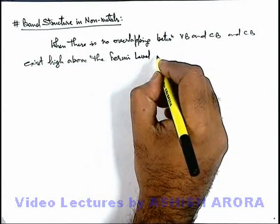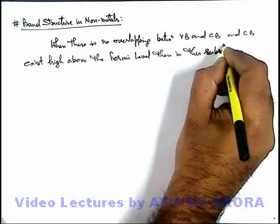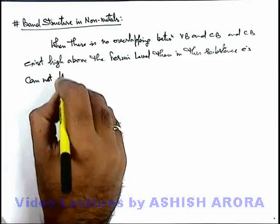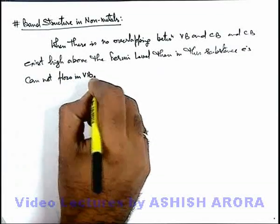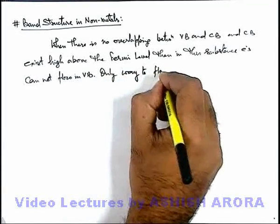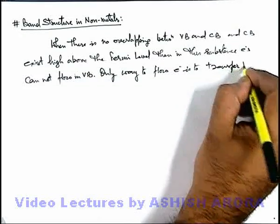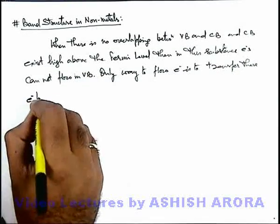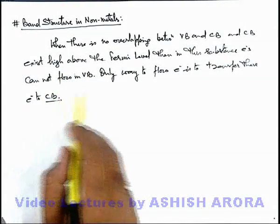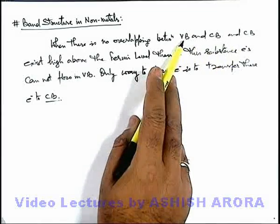We can also write that in this substance, electrons cannot flow in the valence band. The only way to flow electrons is to transfer these electrons to the conduction band. No electrons are in the conduction band because there is no overlapping between the conduction band and valence band.